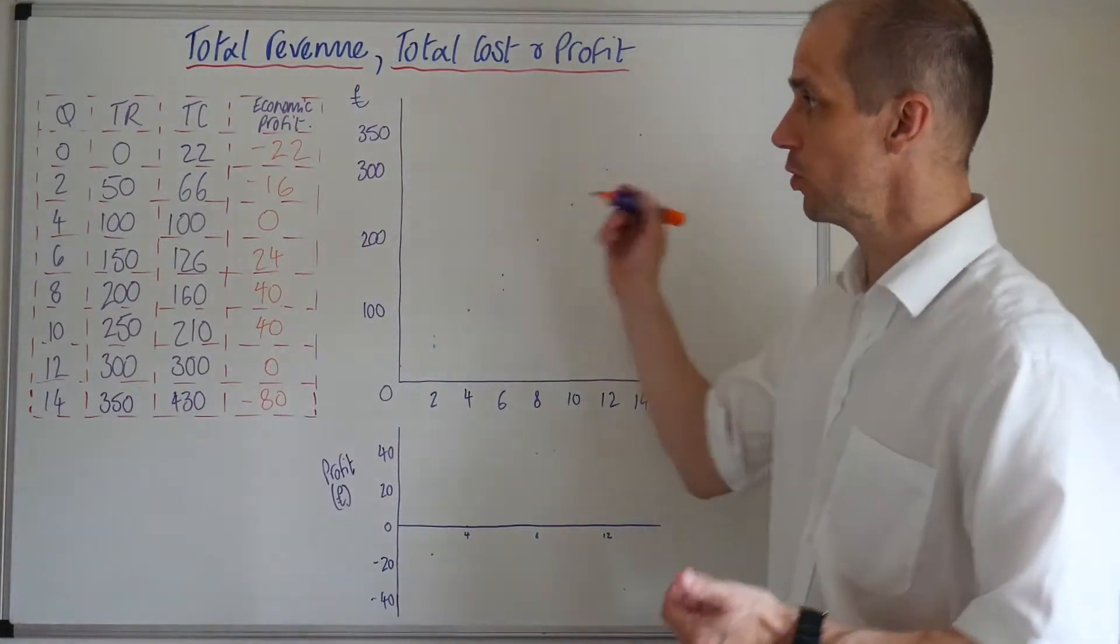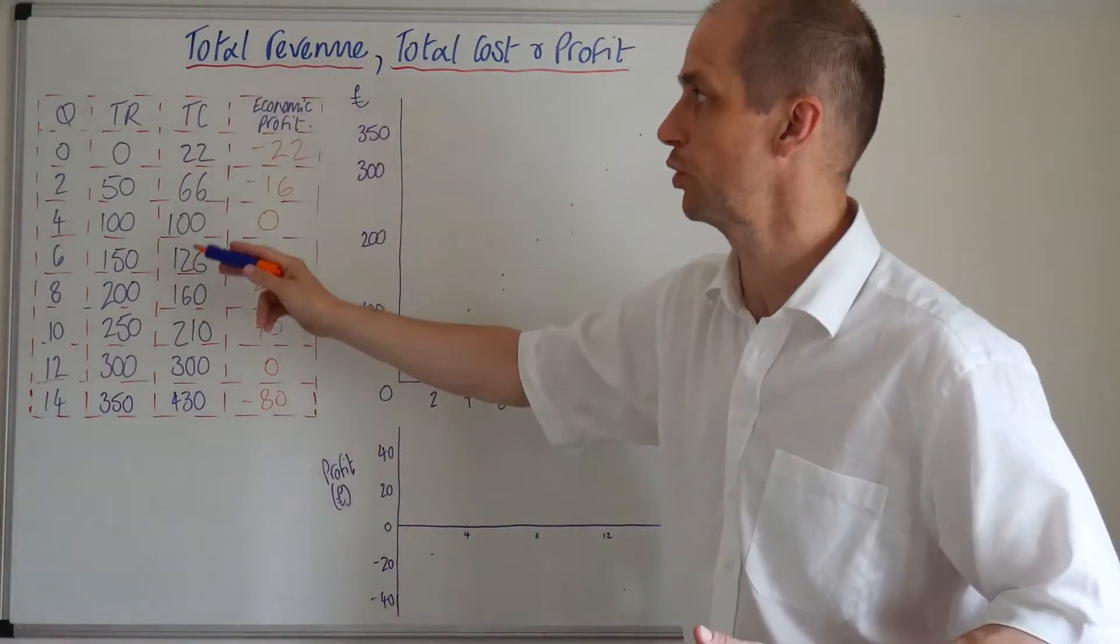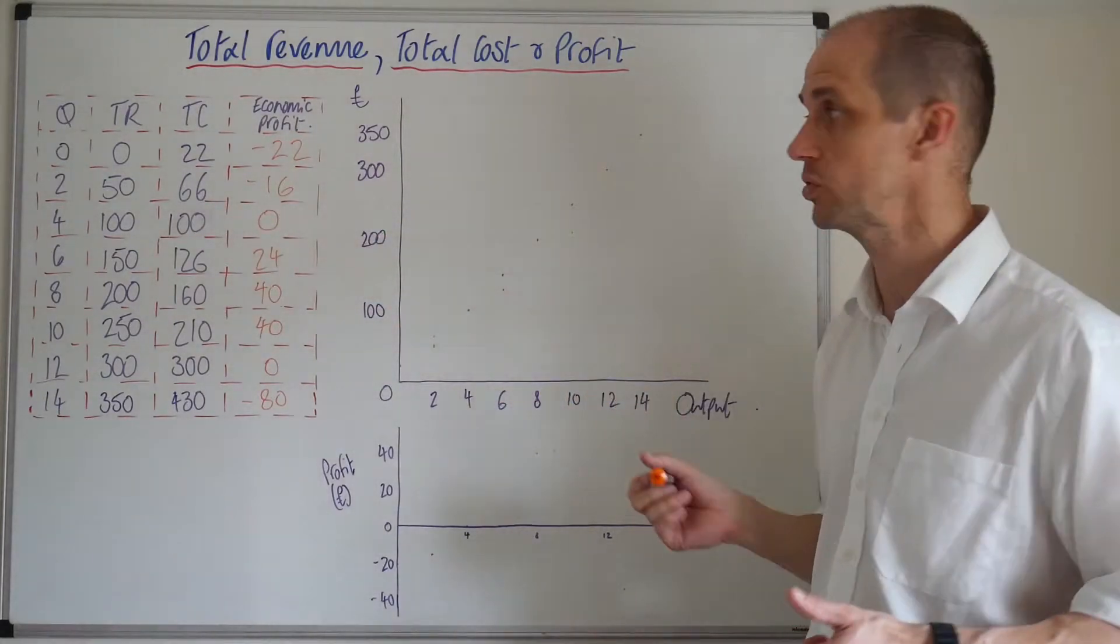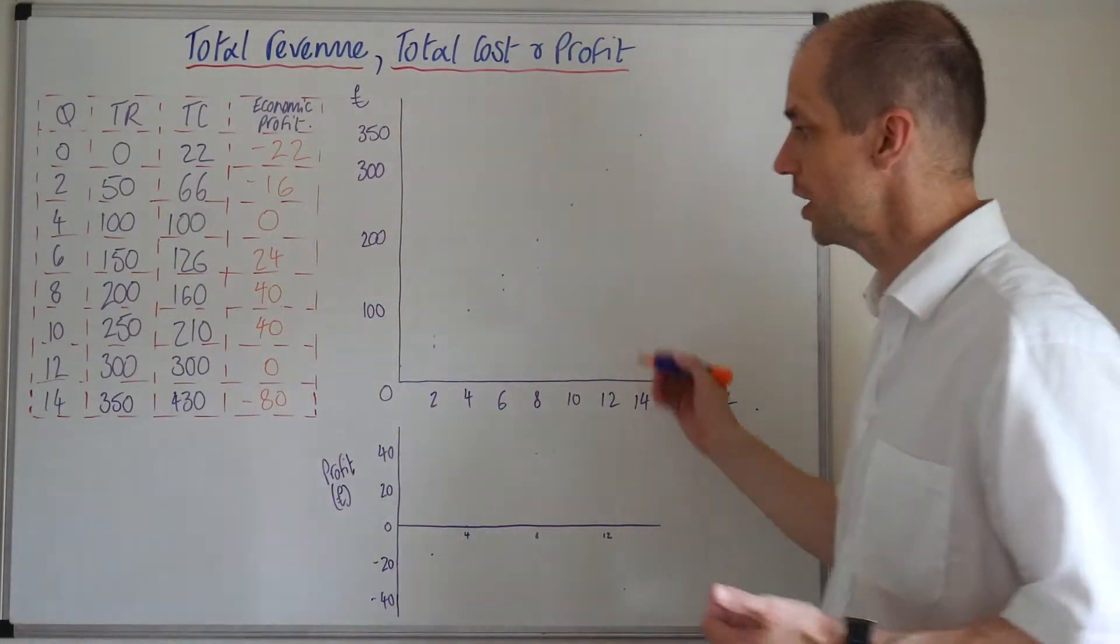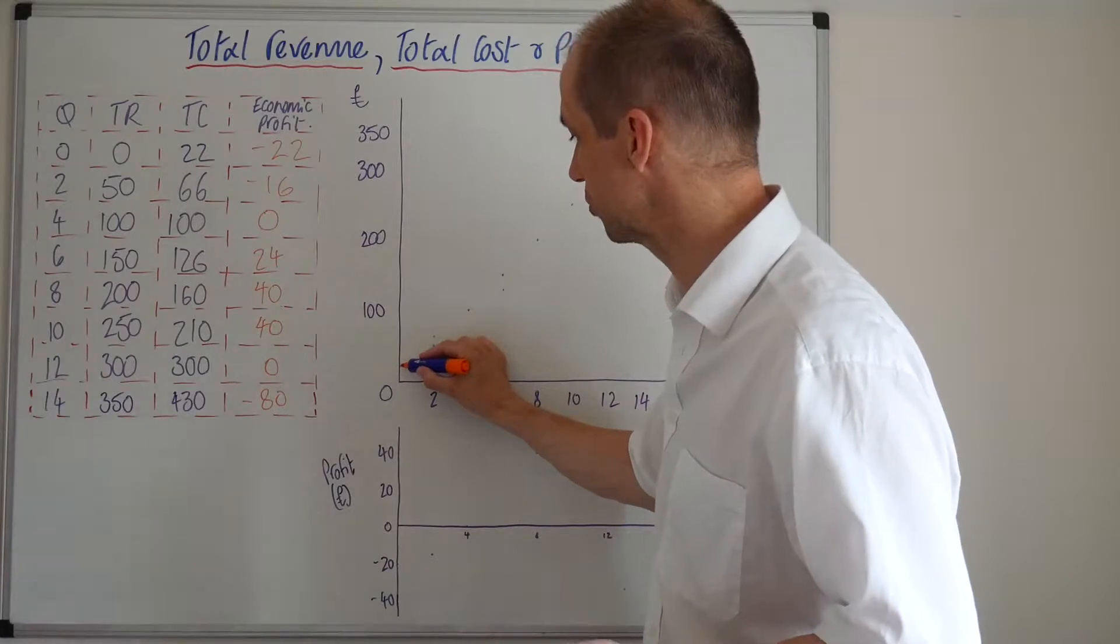Okay, now from here, we can now actually just put down our total revenue and total cost curves. So let's do this. Now, starting off with our total cost,